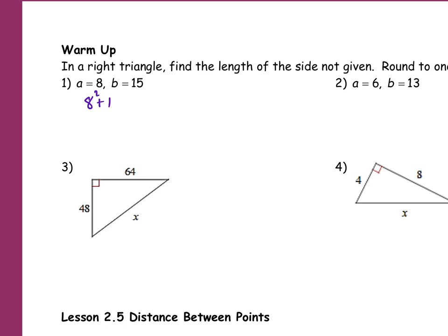So 8 squared is 64 and 15 squared is 225, equals C squared. And what's 64 plus 225? 289 equals C squared. So then what do I do? Square root it. And C is going to equal 17. That's beautiful. Nice job.